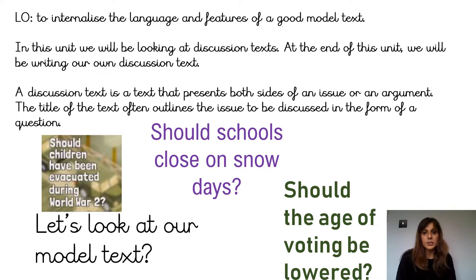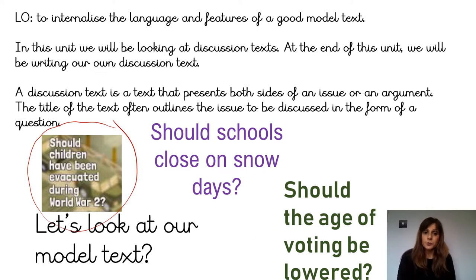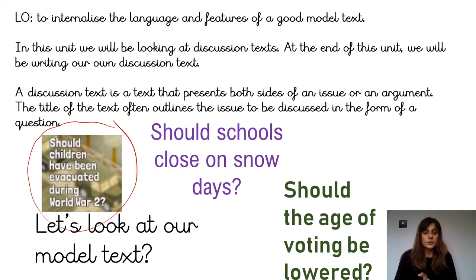In this unit, we will be looking at different discussion texts, and at the end of the unit, we will be writing our own discussion text. A discussion text is a text that presents both sides of an argument, or an issue, and the title of the text often outlines the issue to be discussed in the form of a question. For example: should children have been evacuated during World War II? That could form the question of a discussion text, because there are two opinions. Some people think, for the safety of the children, they should have been evacuated. Other people believe they should not have been evacuated, because they should not have been separated from their parents, and some children had experienced very difficult lives when they were evacuated.